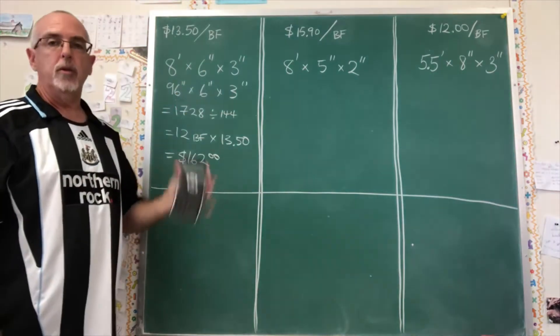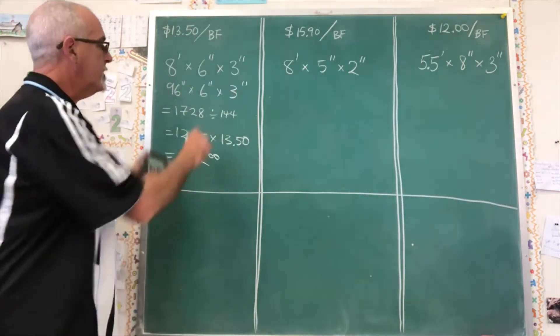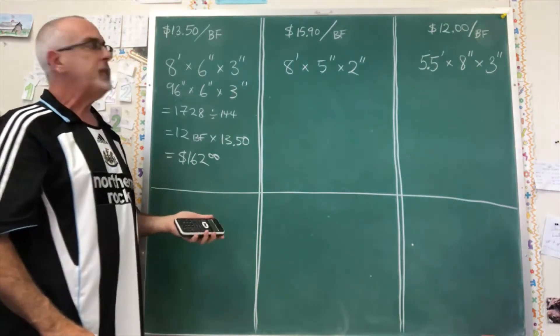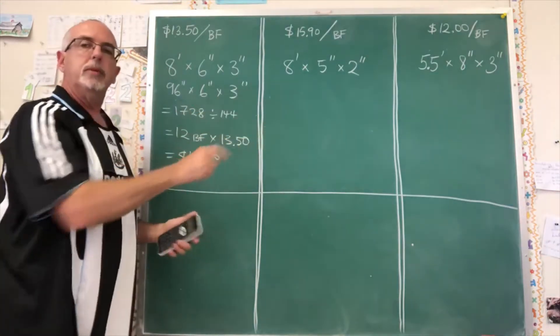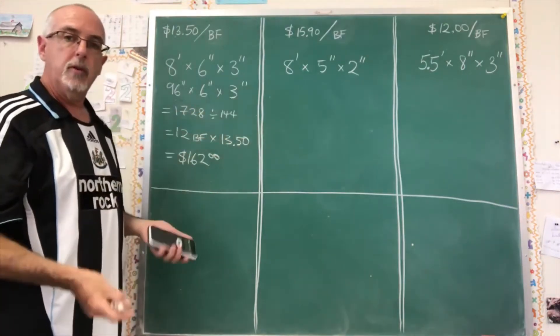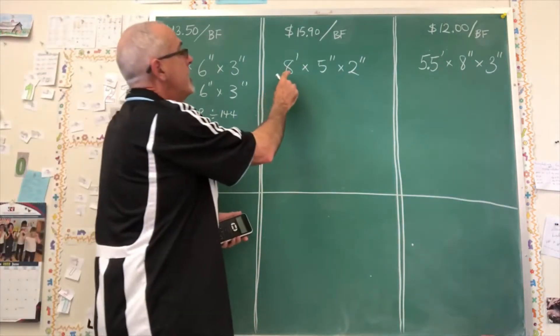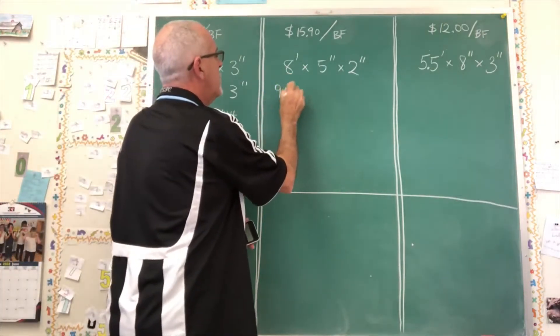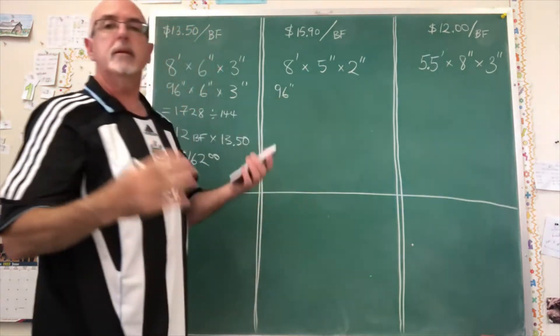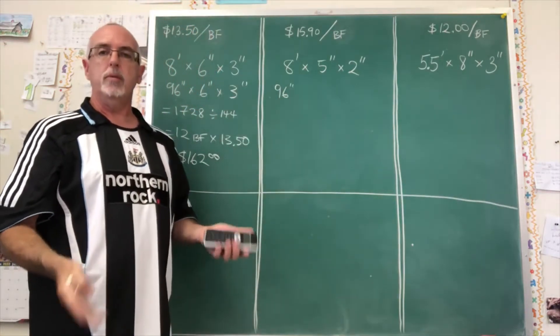So this isn't that hard to do when you have a calculator and you can sort of estimate it in your head. Let's do a couple more examples and then let's see if we can think of another way of doing it. Eight feet again is 96 inches. Why do I keep choosing eight feet? Because it's a standard measure for wood when you buy it.